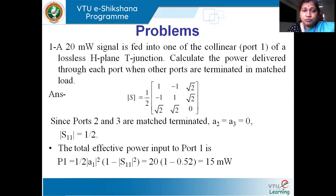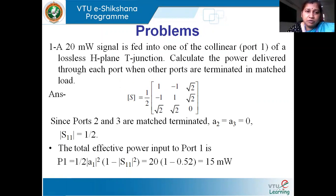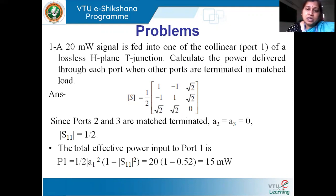Coming to the first problem. The problem is from an H-plane T-junction. A 20 milliwatt signal is fed into one of the collinear ports — port one — of a lossless H-plane T-junction. Calculate the power delivered through each port when the other ports are terminated in matched load. Since it is an H-plane T-junction, we have three ports, and we need to calculate the power delivered at each.